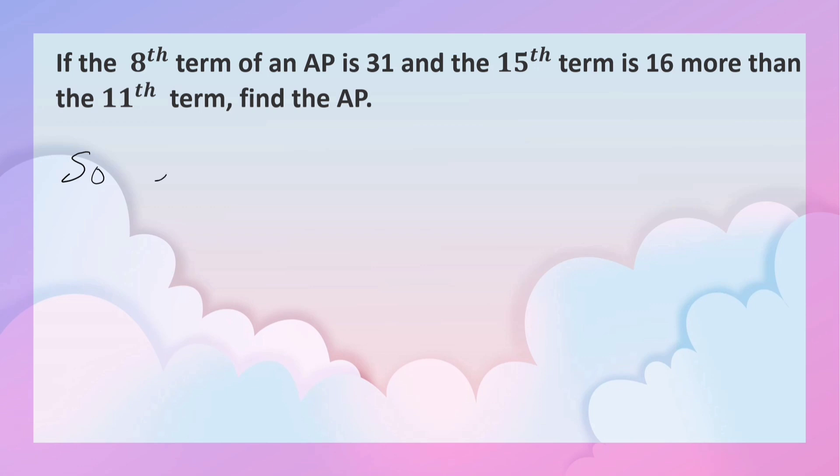So the AP is: a is 3, then 3 plus 4 is 7, then 7 plus 4 is 11, then 11 plus 4 is 15, and so on.